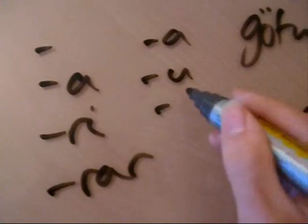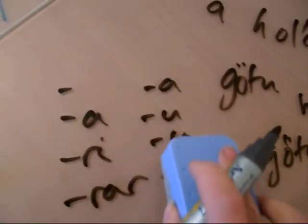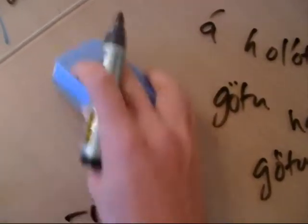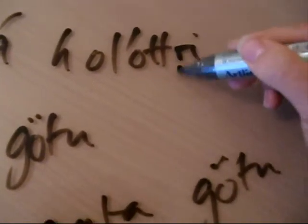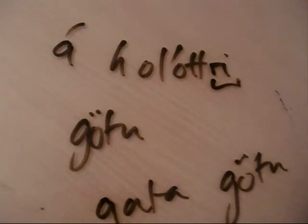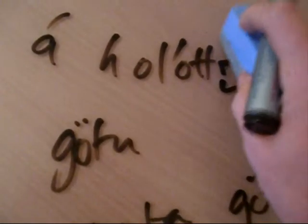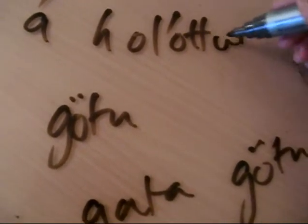The weak form of adjectives is A, U, U, U for feminine. Normally you'd have the weak adjective here, which would be hol followed by the weak form. Götu is the dative form of gata, which is feminine, so the feminine dative ending is applied. Hóll or holur is the dictionary form with the masculine ending, and it means a pothole.